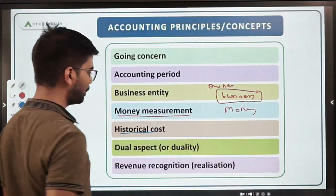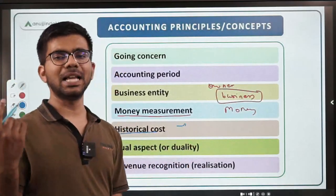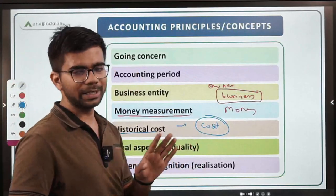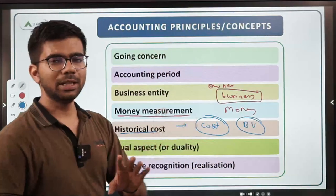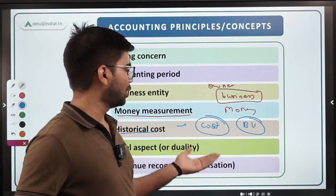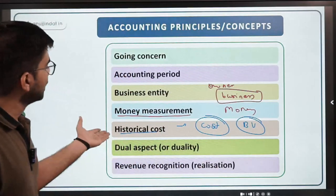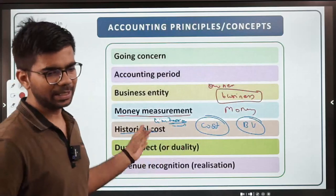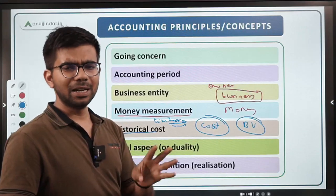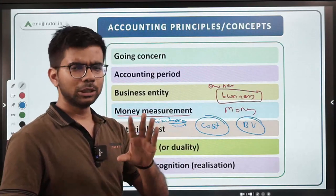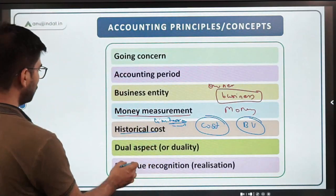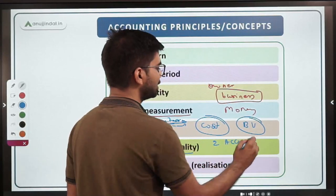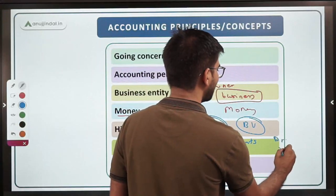The historical cost concept says that we record every asset, liability, expense, and revenue at cost price only — that is the book value. For fixed assets, depreciation is charged gradually and the value reduces over time. This concept has limitations because it does not reflect market value, which is why new Indian accounting standards have introduced concepts of fair value and net realizable value. The dual aspect or duality concept means every transaction affects two accounts — one account is debited and one is credited. This is your double entry system.